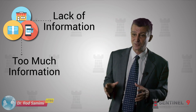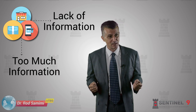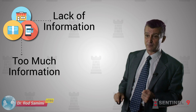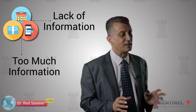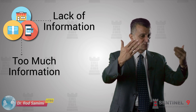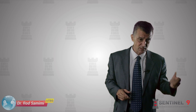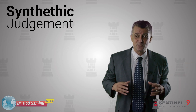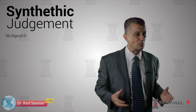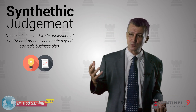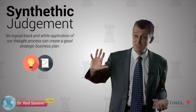Those circumstances — too much information — also create ambiguity, as much as lack of information does. So you can have lack of information or surfeit of information, which requires in business planning what's called in the literature synthetic judgment. You can check this in the referenced book. No logical black-and-white application of our thought process alone can create a good strategic business plan — it has to go into synthetic judgment.